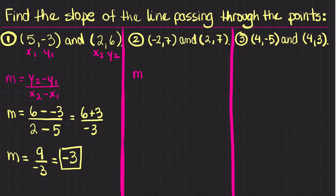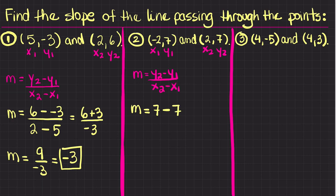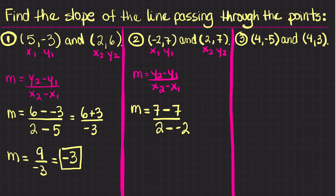For the second problem, again I'm going to write my formula: y2 minus y1 divided by x2 minus x1, and I'm going to label my points. Now I'm going to start plugging in the values. m is equal to y2, which is 7, so 7 minus y1, which is also 7 — as you can see, y1 is 7 — and this is over x2, which is 2.